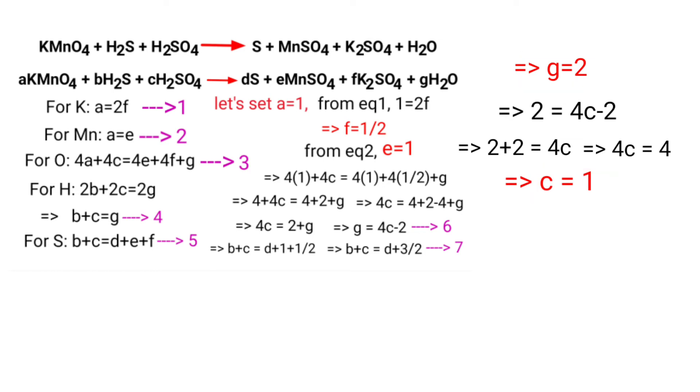Now apply the g and c values in equation 4. Then b plus 1 equals 2, so b equals 2 minus 1, that is equal to 1.